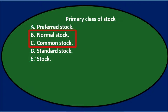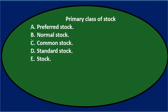So we're between B and C — either normal stock or common stock. Between those two, common stock is probably the one that sounds more familiar because it's the most common form of stock. The primary class of stock is C, common stock.